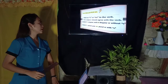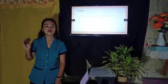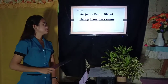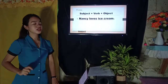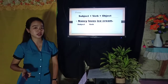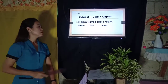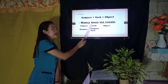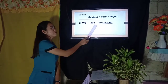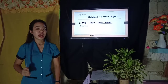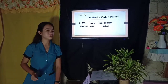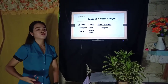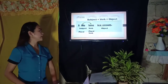Let's have the form for simple present tense: subject plus verb plus object. Example: Nancy loves ice cream. The subject is Nancy, the verb is loves, and the object is ice cream. Since Nancy is singular, we use a singular verb — loves with S. Next example: We love ice cream. The subject is we, the verb is love, and the object is ice cream. The subject is plural, so we use a plural verb.